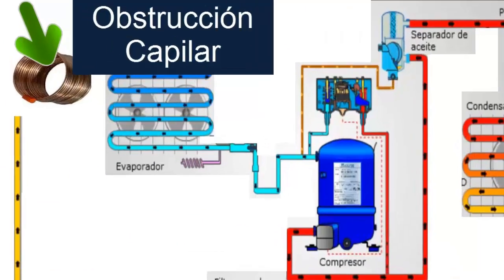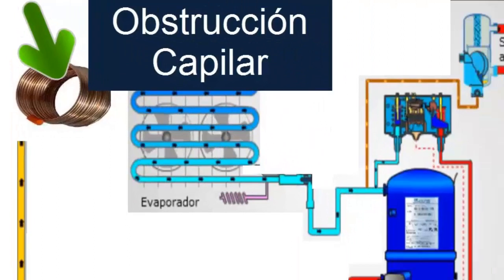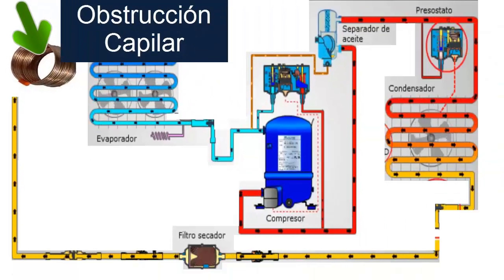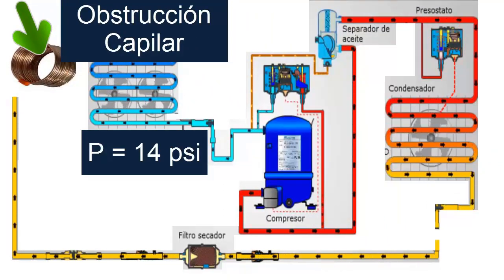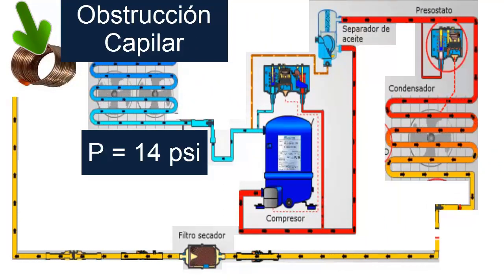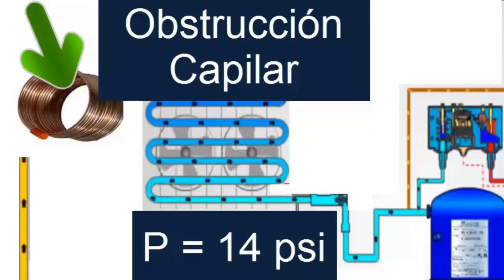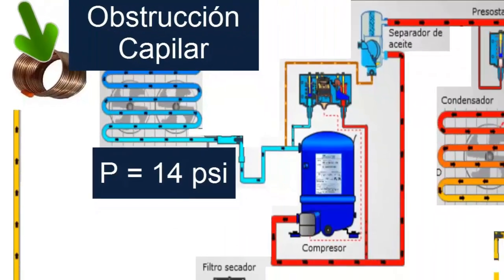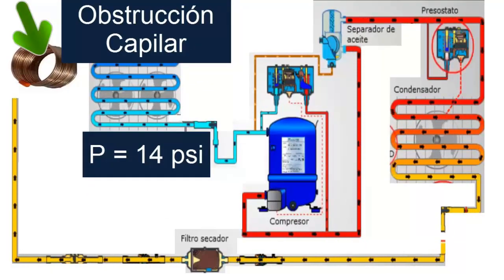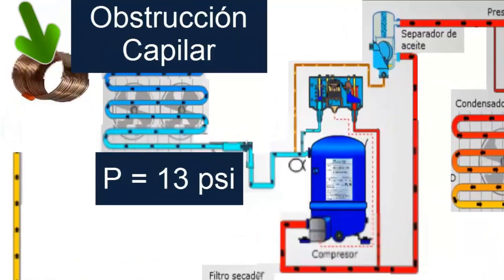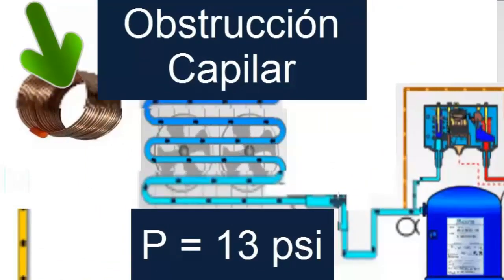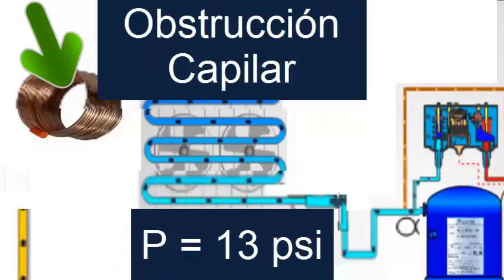When the obstruction of the capillary tube begins, we will start to see a noticeable decrease in pressure in the evaporator. The pressure that was before 15 psi is going to start to go down. In this case, it goes down to 14, progressively 13, and the pressure goes down because there is less refrigerant in this area. In the entire area of the evaporator, in this pipe, there is less refrigerant.